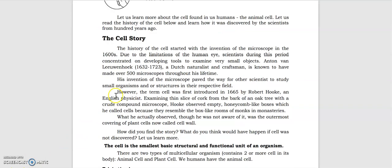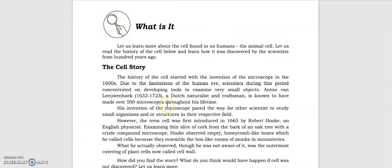Here in the What's It portion, we have the cell story. The history of the cell started with the invention of the microscope in the 1600s. Due to the limitations of the human eye, scientists during this period concentrated on developing tools to examine very small objects. Anton van Leeuwenhoek, a Dutch naturalist and craftsman, is known to have made over 500 microscopes throughout his lifetime.